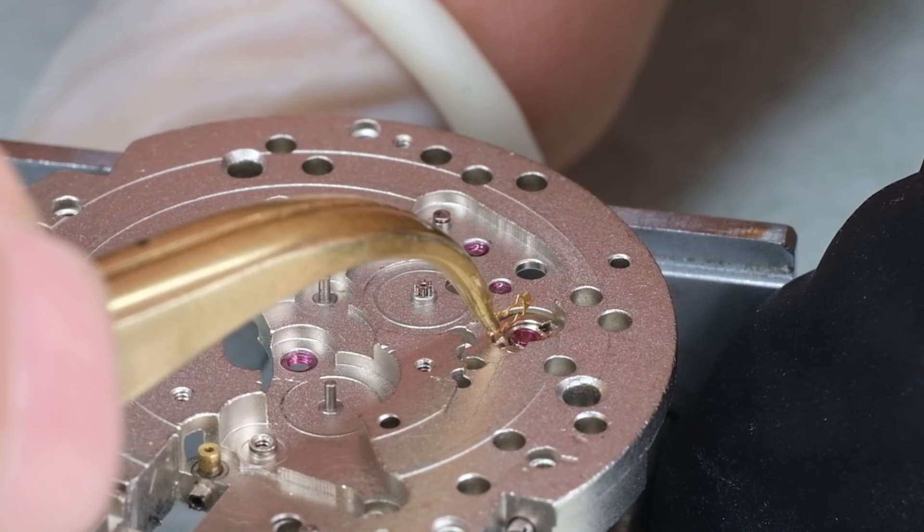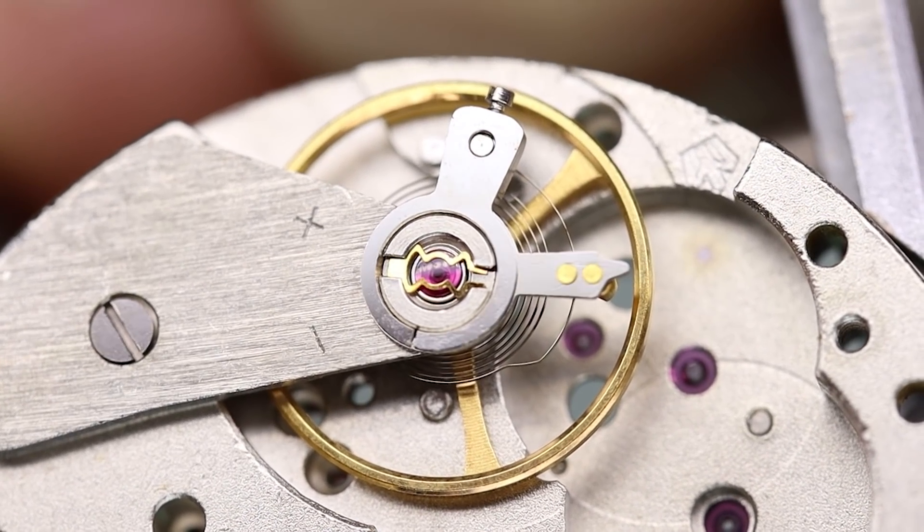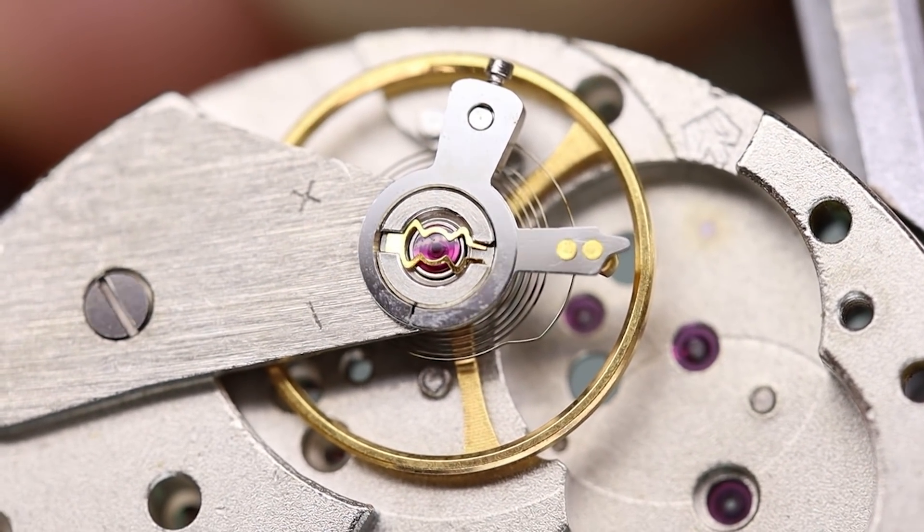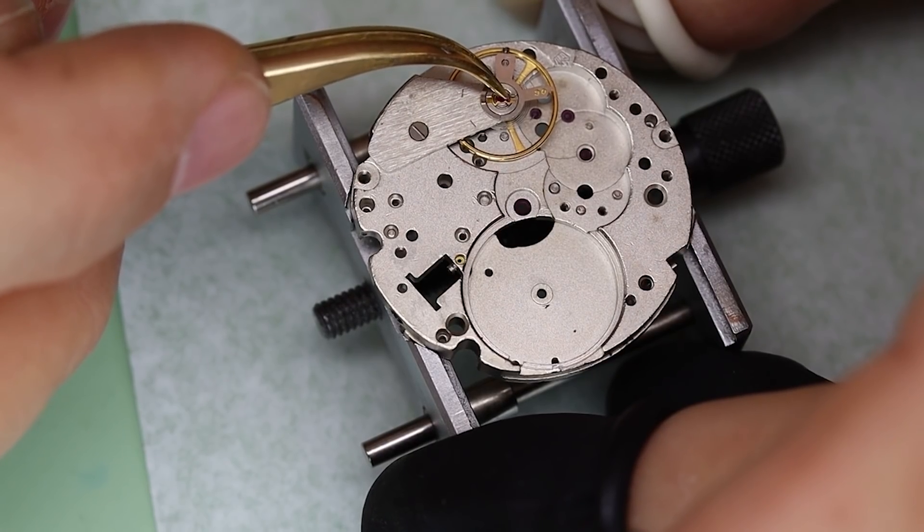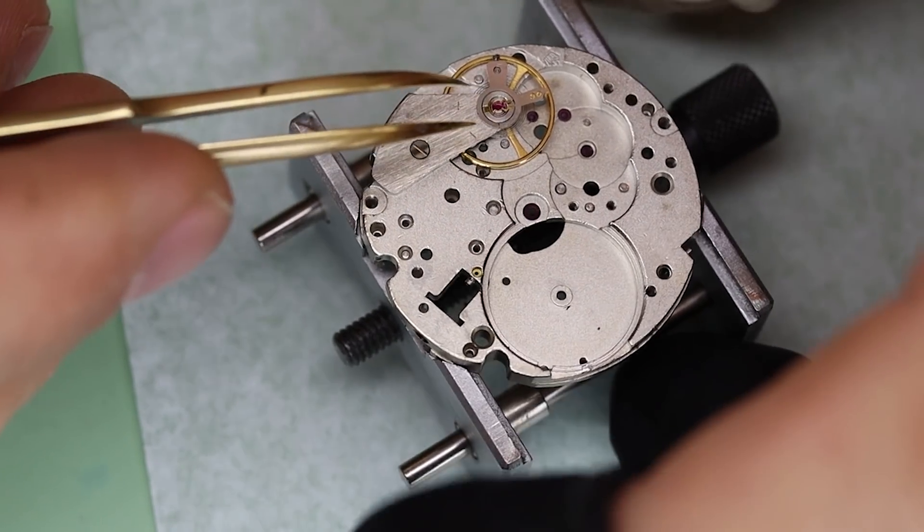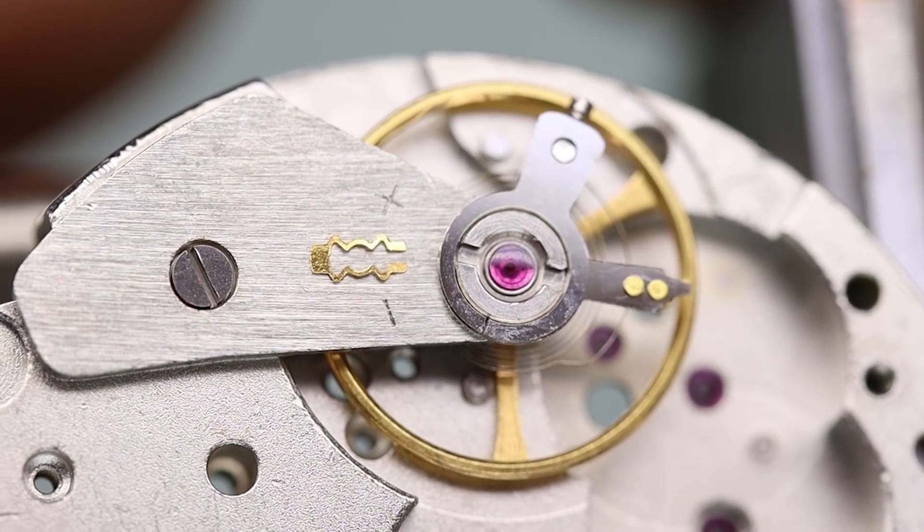One curious thing you do find in Poljot watches is this little spring for the shock setting. Looks like an Incabloc, but this one does not hinge, so you have to slide it out and then slide it back in again afterwards after cleaning. It's a little bit odd. There we have it.